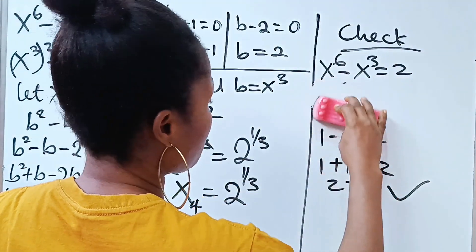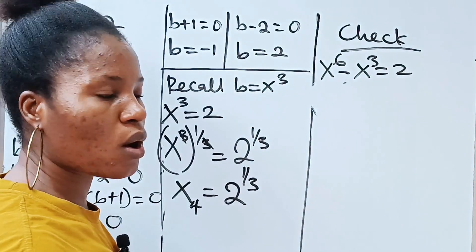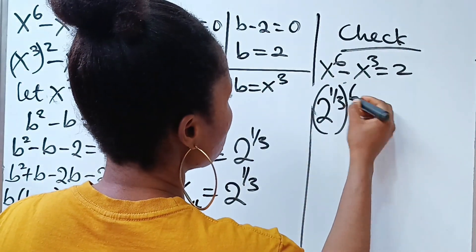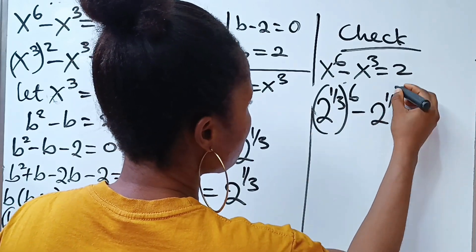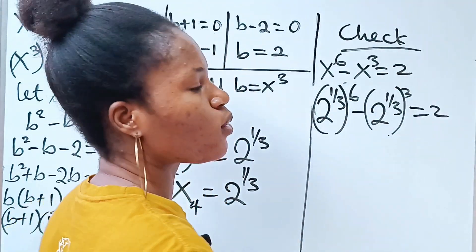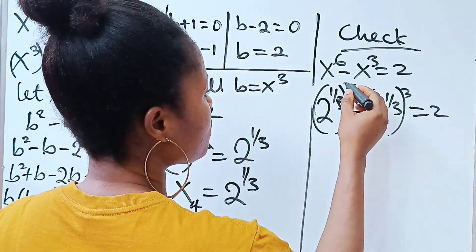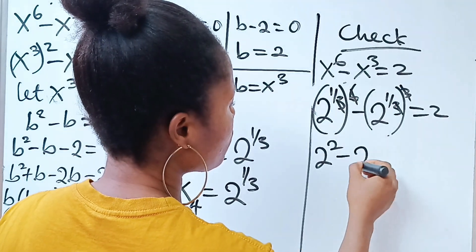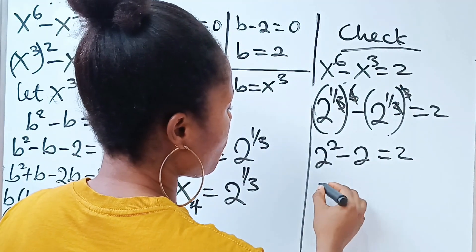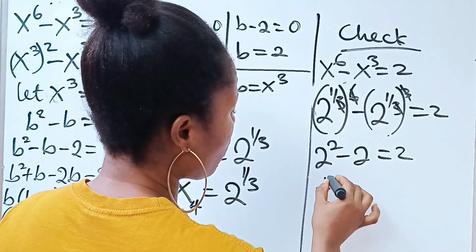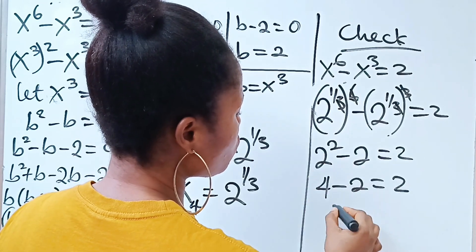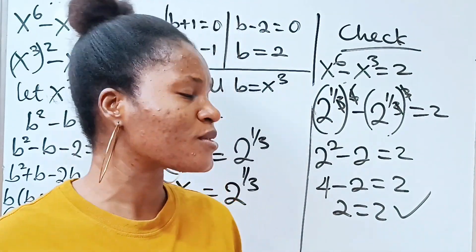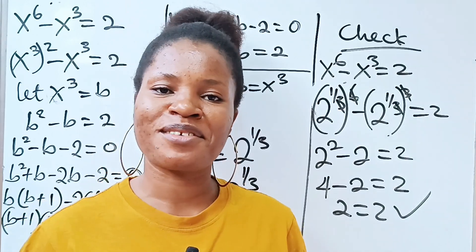For x equals 2 to the power of 1 over 3: raise to the power of 6 gives 2 to the power of 2, which is 4, and raise to the power of 3 gives 2. So 4 minus 2 equals 2, which equals 2. Both solutions are verified. Thank you so much for watching and I wish you a lovely day.